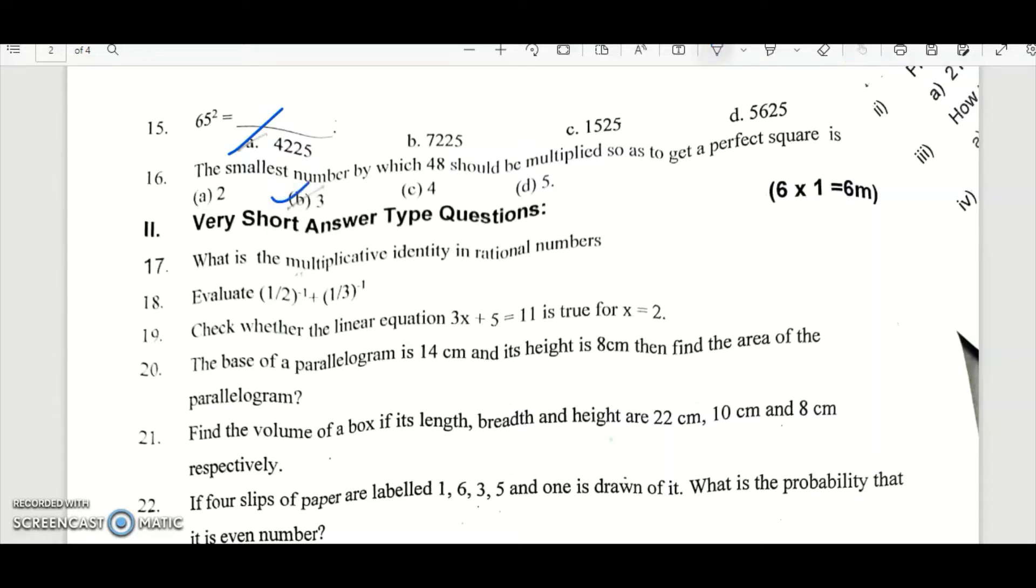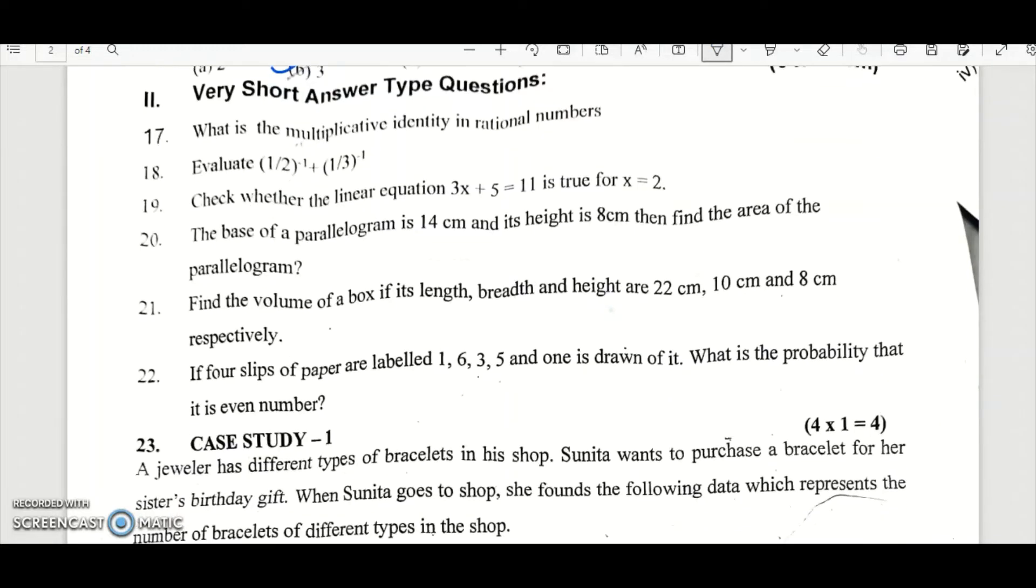Now let me show the rest of the paper. So this is very short answers. What is the multiplicative identity in rational number? 1 is the multiplicative identity. Evaluate 1 by 2 power minus 1, plus 1 by 3 power minus 1, equal to 2 plus 3 reciprocal, equal to 5 would be the answer.